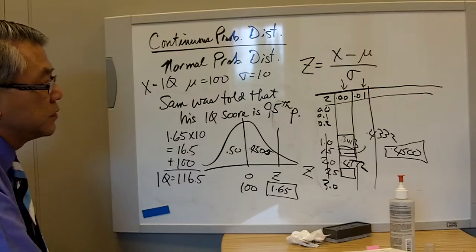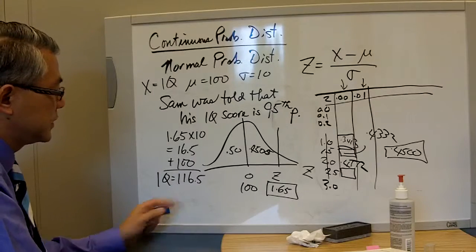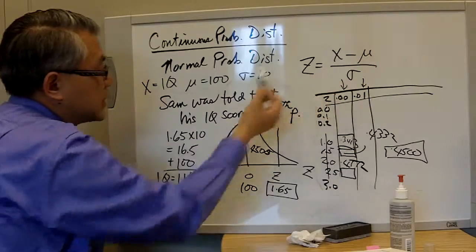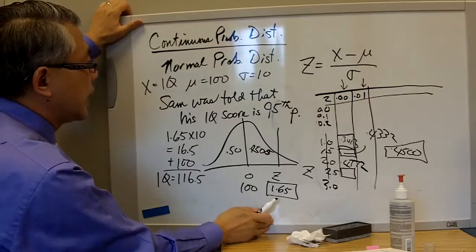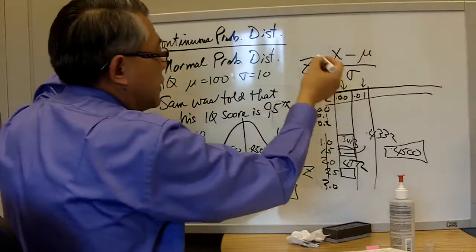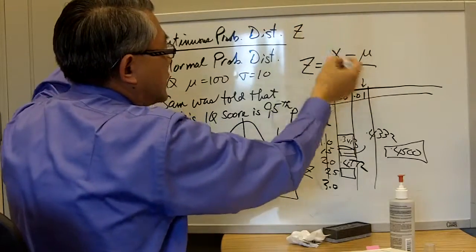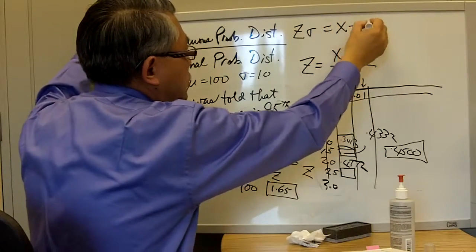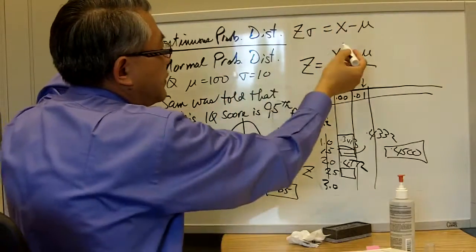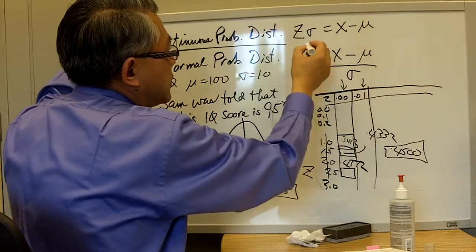Do we have an equation that works that way? Well, if you look at this equation right here, we can change that to say z times σ is equal to x minus μ. And then if you flip the two, so x minus μ,